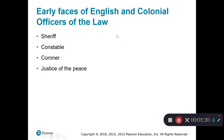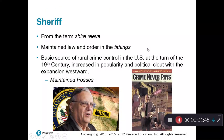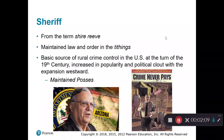Some of the early faces of English and colonial officers of the law were the sheriff, the constable, the coroner, and the justice of the peace. We have law enforcement officials across the United States that are sheriffs. This comes from the term 'Shire Reeve,' which is an English version of today's sheriff. They were the enforcement arm for the king and maintained law and order in their districts.